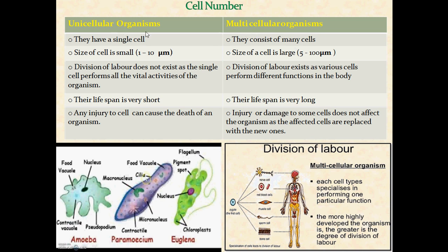Let's discuss unicellular organisms. Here in front of you there are three examples: amoeba, paramecium, and euglena. All three are single-celled, meaning they are independent and have the capacity to self-replicate by dividing their body into two parts. They can also engulf food by creating invaginations — you can see the amoeba protruding and engulfing food. The same applies to paramecium and euglena.